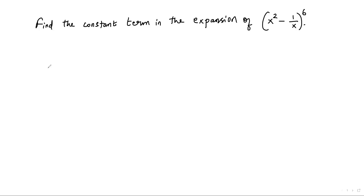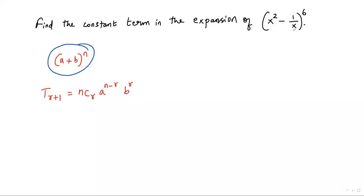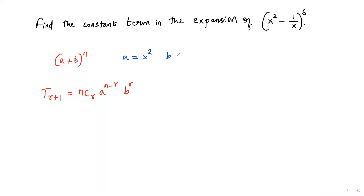Let's go over the general concept of binomial expansion — that is (a + b) to the nth power. In this expansion, the formula to find the (r+1)th term is nCr times a to the power (n minus r) times b to the power r. Comparing with our expression, a equals x squared, b equals negative 1 over x, and n equals 6.